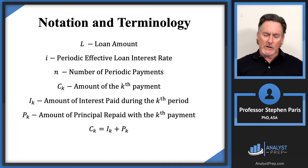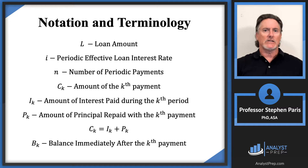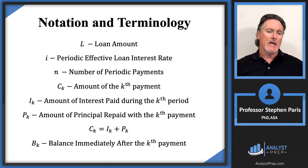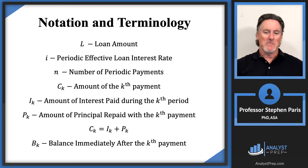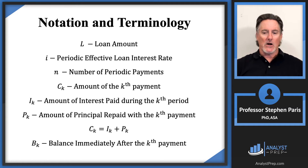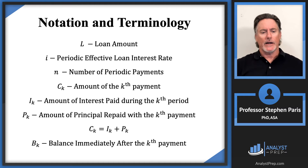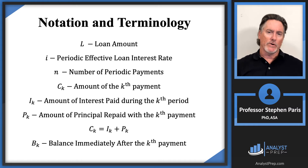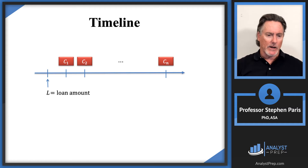There's one more important notation. In many problems we want to know the balance on the loan at a certain point in time. Cap B sub k is the balance immediately after the kth payment. You'll also hear this called the 'outstanding balance' or 'outstanding principal' — meaning the balance still owed. I'll just say 'balance' and represent it as cap B sub k.